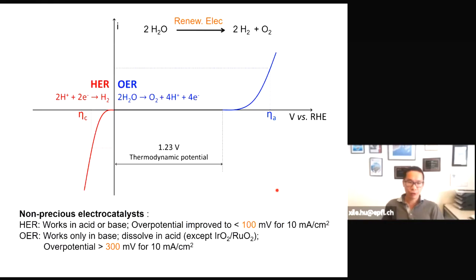The oxygen evolution reaction (OER), shown here in the blue part, is the oxidative half-reaction of water splitting, which can be used to make hydrogen using electricity from renewable energies. Water splitting is widely considered a promising solution for future energy storage. Both the reductive hydrogen evolution reaction and the oxidative OER require an overpotential to proceed at a reasonable rate, but OER has a much higher overpotential loss even with state-of-the-art catalysts, making it the so-called bottleneck for water splitting.